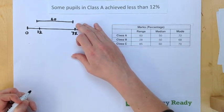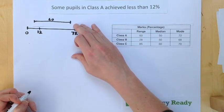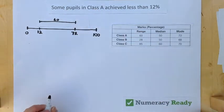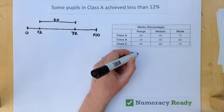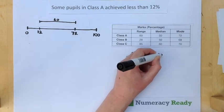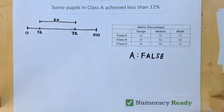Any lower and we wouldn't have that 72 included in our range. So if we apply that to Statement A, we can see that it's false because it's impossible for any student to have scored less than 12%.